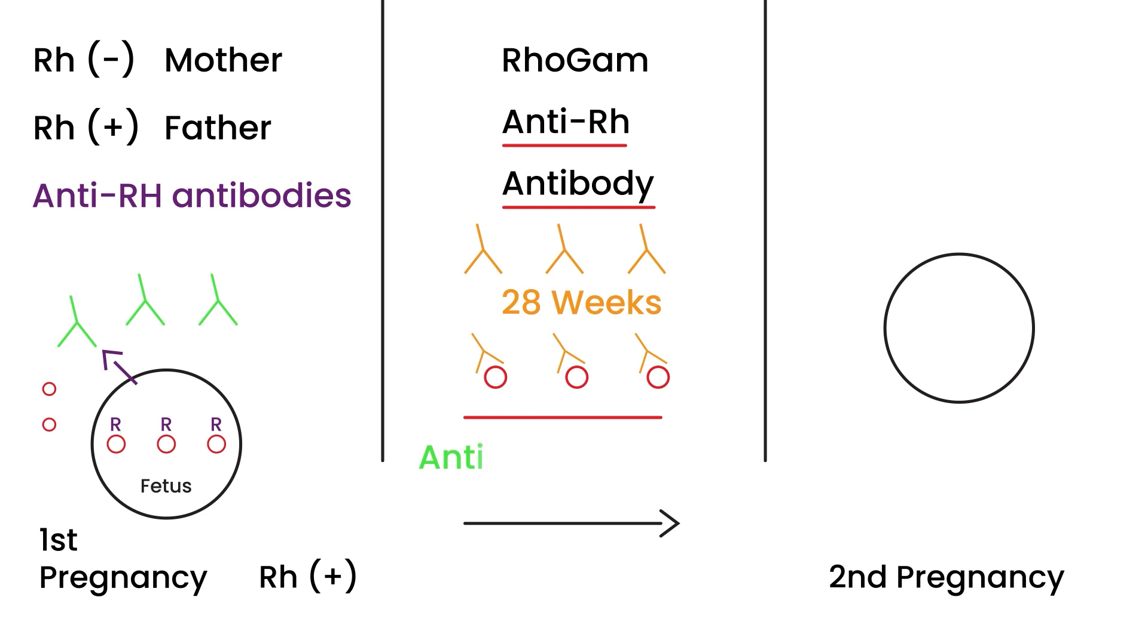These linger and circulate in the system and remain until the second pregnancy. If you have a second pregnancy with a fetus with these Rh positive red blood cells, these anti-Rh antibodies can cross over via the placenta and attack the fetal red blood cells. They can cause hemolysis, and if they cause hemolysis, then the baby can become severely anemic and it can also lead to death of the fetus.